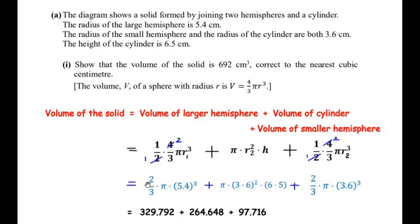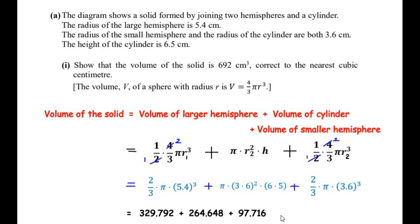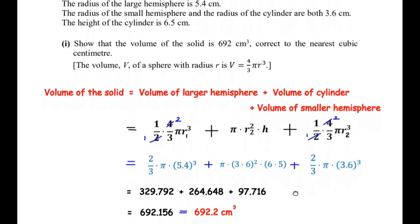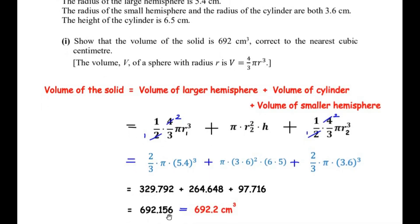We calculate each term to three decimal places for accuracy. Adding all three values together we get 692.156, and rounding to the nearest cubic centimeter gives 692 cubic centimeters. This confirms the volume of the solid.